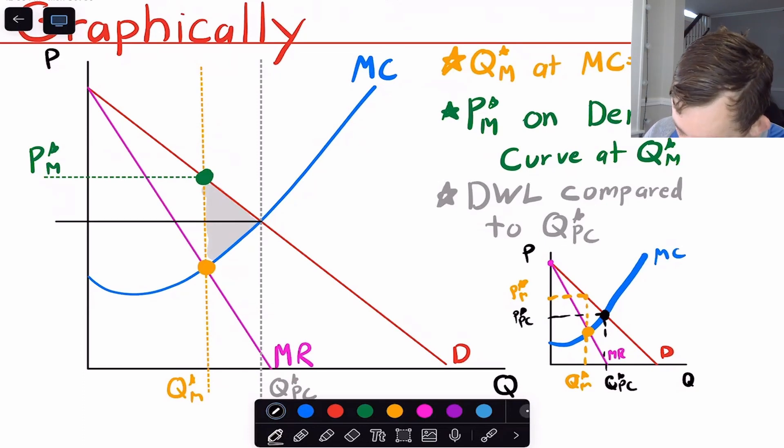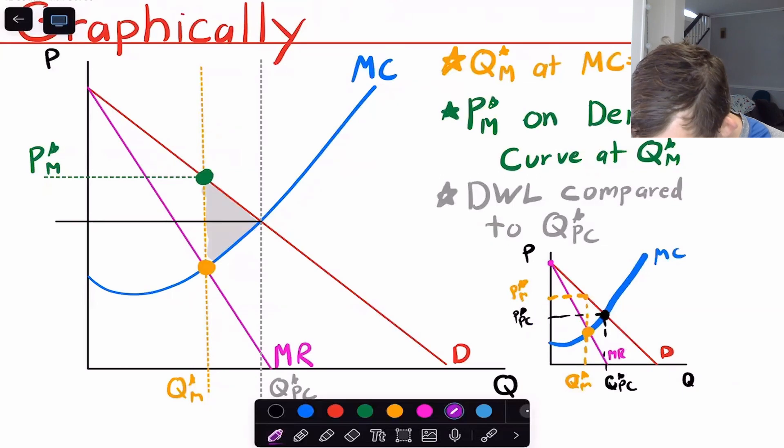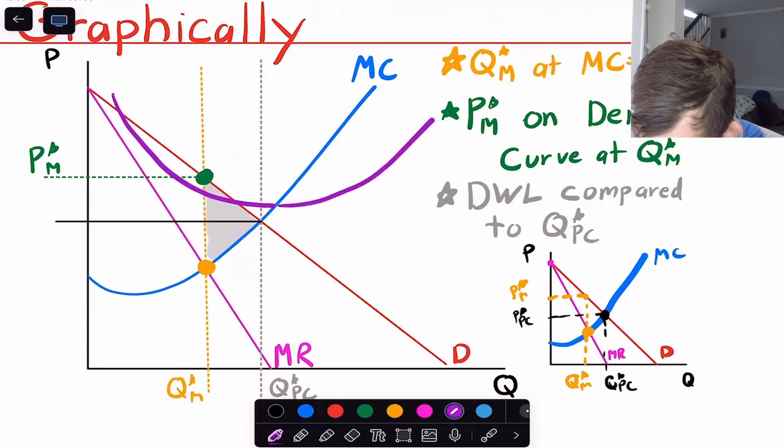Now you can also see if I were to draw an average total cost curve on this graph, maybe I will go ahead and draw that in purple. So here's the average total cost where it's going to come in like this. It's going to touch at the minimum and then it's going to go back up. So here's average total cost. And you can see that the price is above average total cost, which means we're making positive profit in both the short run and the long run for all the reasons we've talked about in previous videos.